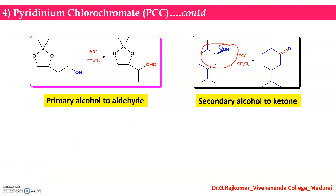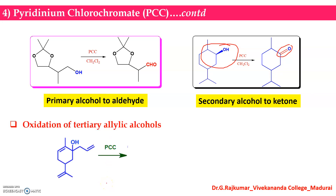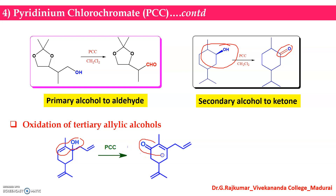The secondary hydroxyl groups can also be oxidized into a ketone. For the oxidation of tertiary allylic alcohols, this is a tertiary hydroxyl group — in the presence of pyridinium chlorochromate, a rearrangement reaction takes place and you get an alpha-beta unsaturated carbonyl compound as the product.